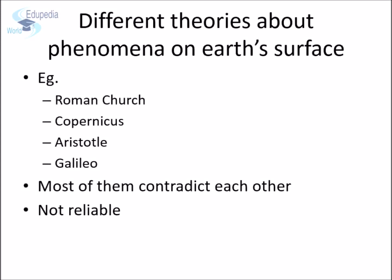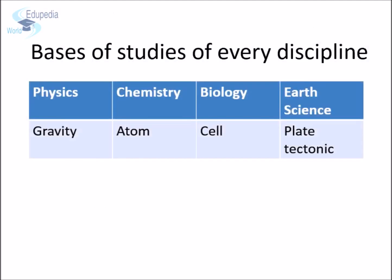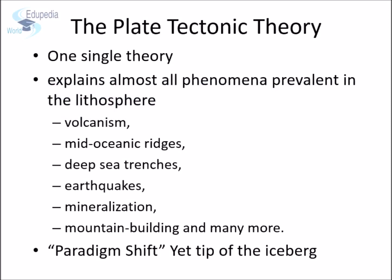Ever since humans started their efforts to unravel the mysteries of this planet, a number of theories were put forward by various groups like the Church, Copernicus, Aristotle, and Galileo. They all presented their understanding about what is happening on Earth. Most of these theories contradict each other and don't seem to be reliable. The way physics revolves around gravity, chemistry revolves around the atom, and biology revolves around the cell — similarly, the concepts of earth science revolve around plate tectonics. Plate tectonics is one single theory that explains a number of geological phenomena.